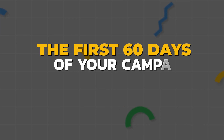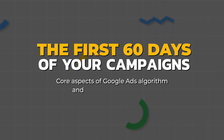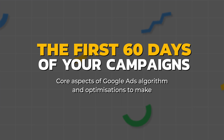In this video, I'm going to break down exactly what is happening over the first 60 days of any new campaign, and what are the core aspects of the Google Ads algorithm that you need to look out for and what optimizations you need to make. By knowing these two elements, you can ensure that your campaign is going to see success for the long term.